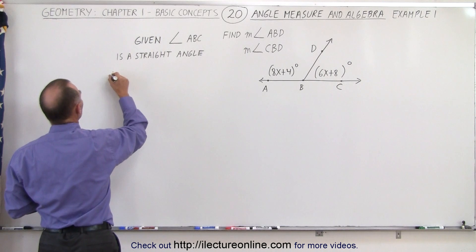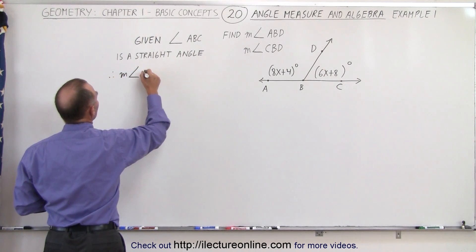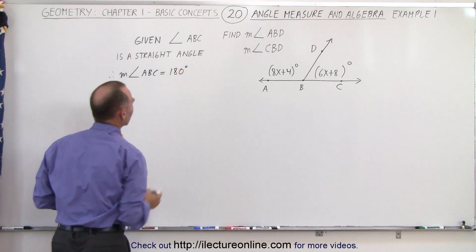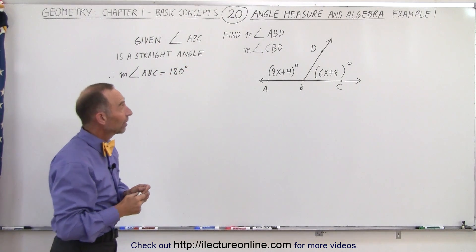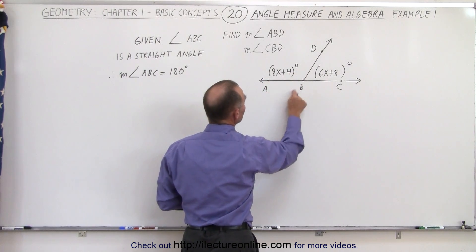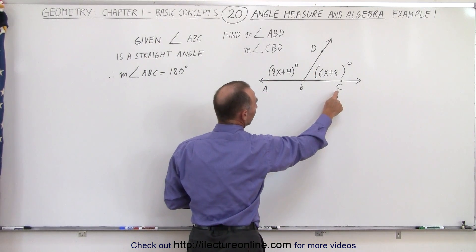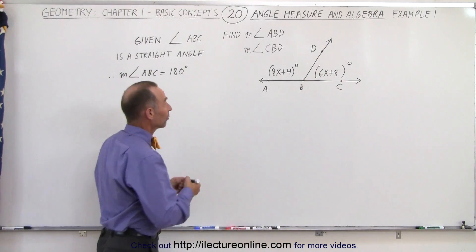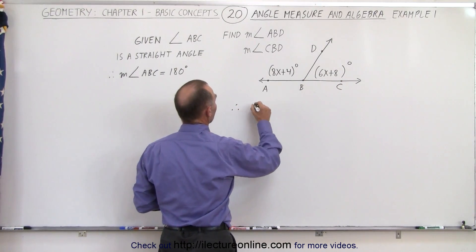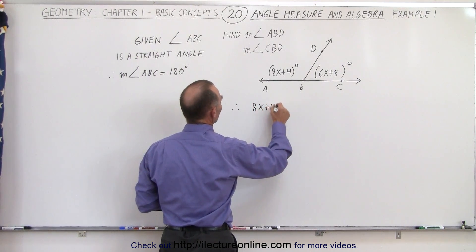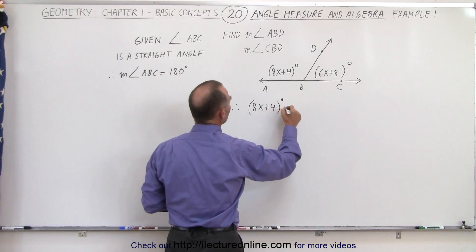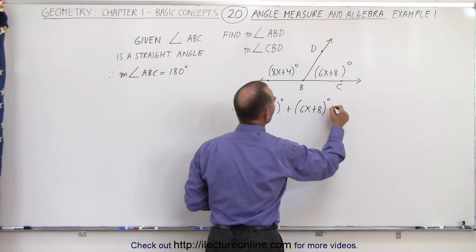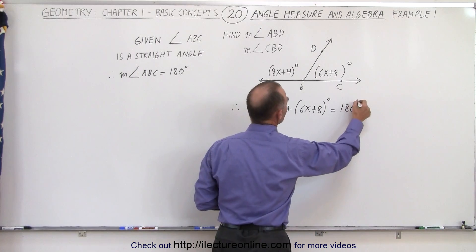This implies that the measure of the angle ABC is equal to 180 degrees. Which then implies that the measure of angle ABD plus the measure of angle CBD together should add up to 180 degrees. Therefore we can say that 8x plus 4 plus 6x plus 8 is equal to 180 degrees.